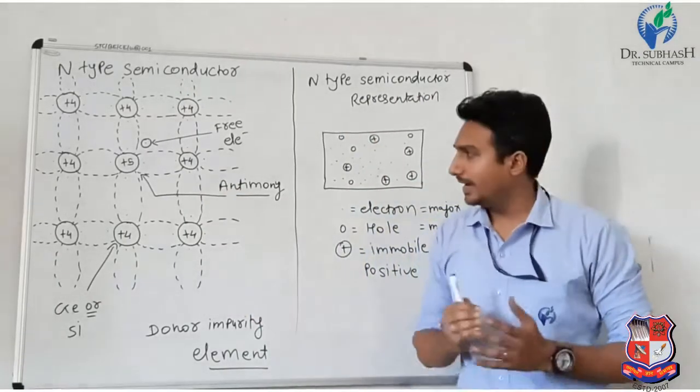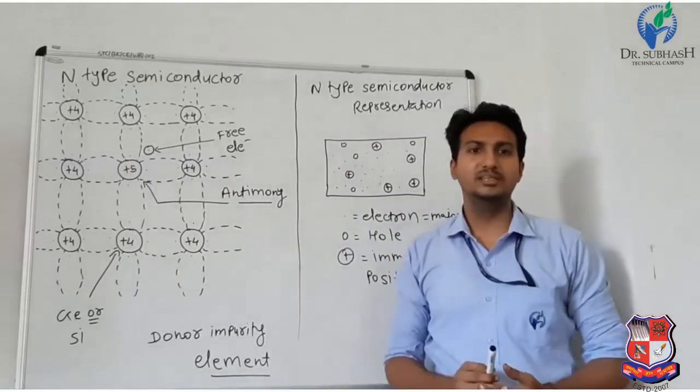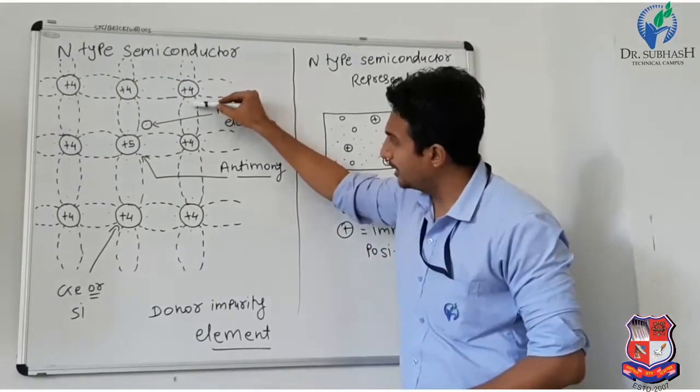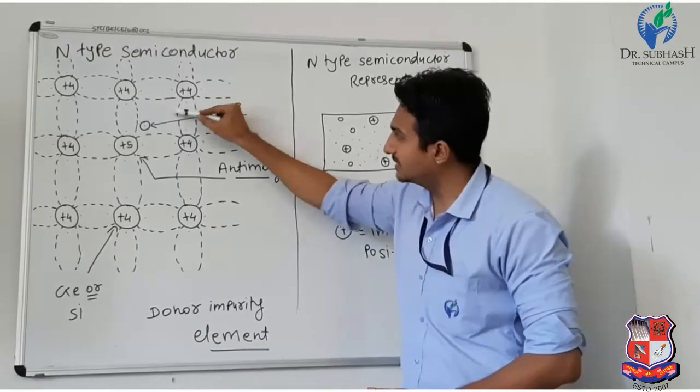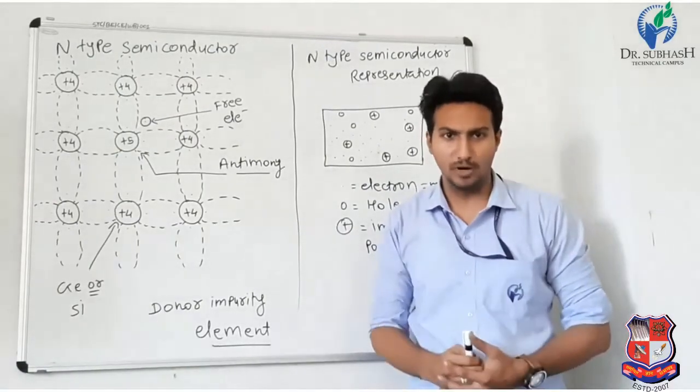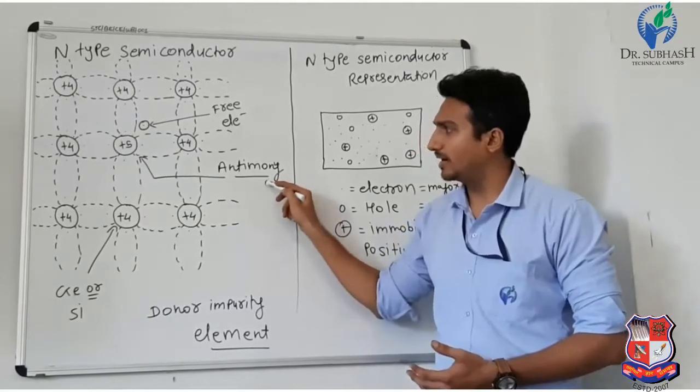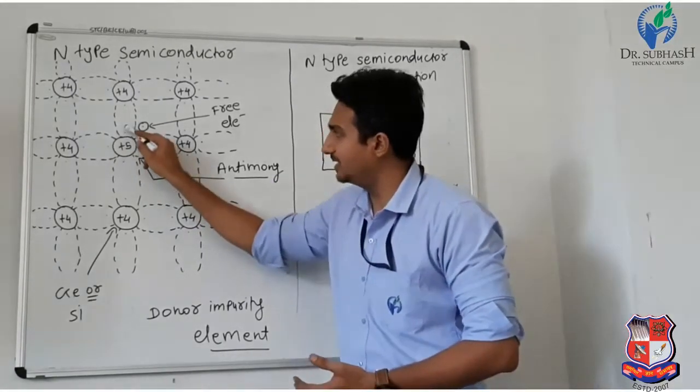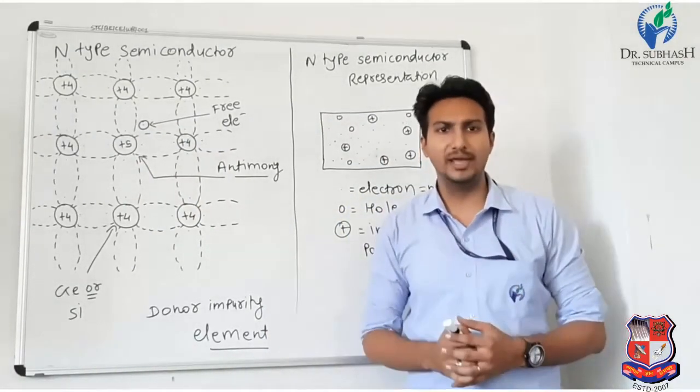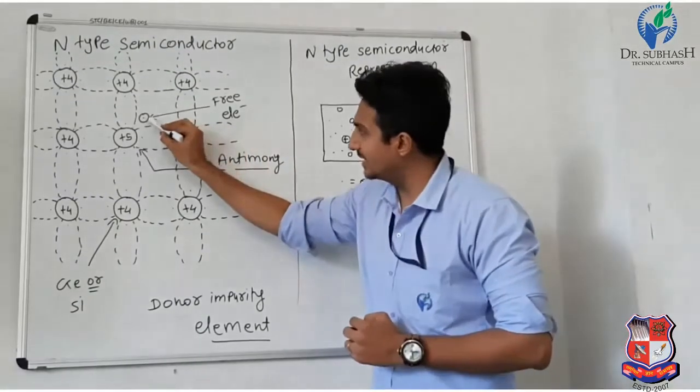These 4 electrons will be attached in covalent bonds with the crystal structure. Since antimony has 5 electrons, there are 4 electrons bonding with the surrounding silicon atoms forming the covalent structure.